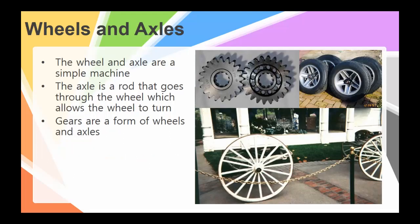The first one we want to take a look at is the wheel and axle. Now the axle is a rod that goes through the wheel which allows the wheel to turn. Gears are a form of wheels and axles so when we start thinking about applying this we're going to change the type of friction instead of having sliding friction or trying to have something dragging across the other. You reduce the amount of friction by creating rolling friction and so this is one of the big benefits but you do still have friction.